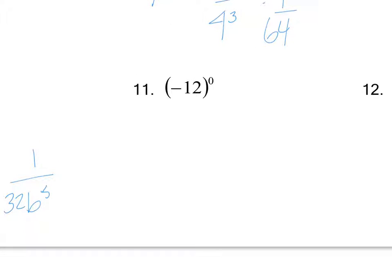Example eleven: anything to the zero power is always going to be one. If the negative is on the inside of the parentheses, it still equals one. But if you had negative 12 to the zero — where the negative is on the outside — you apply exponents first: 12 to the zero is one, then multiply by the negative out front, giving negative one.